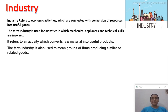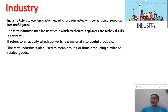The term industry is also used to mean groups of firms producing similar or related goods. For example, toothpaste: many people use Pepsodent, many use Colgate, many use Patanjali — but they all produce toothpaste. So all these different firms producing similar goods belong to the same industry.